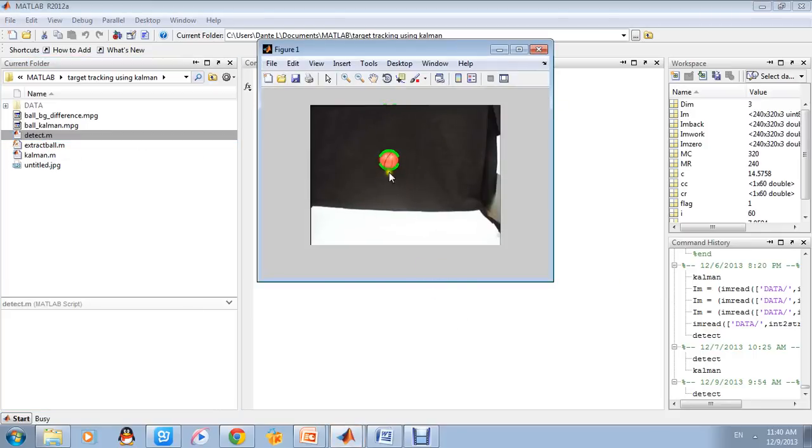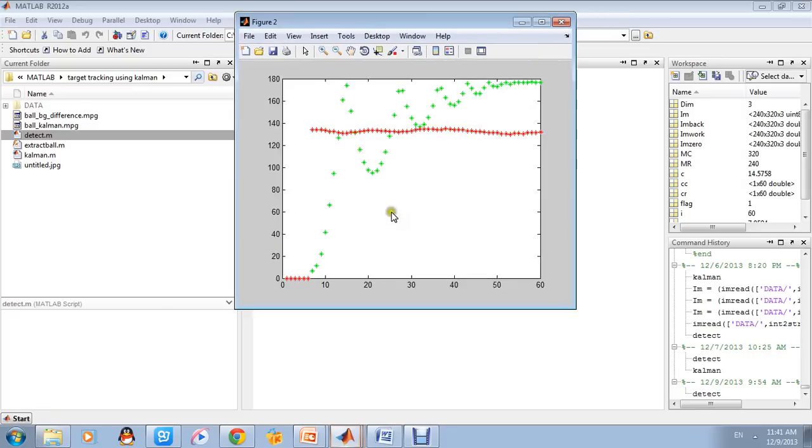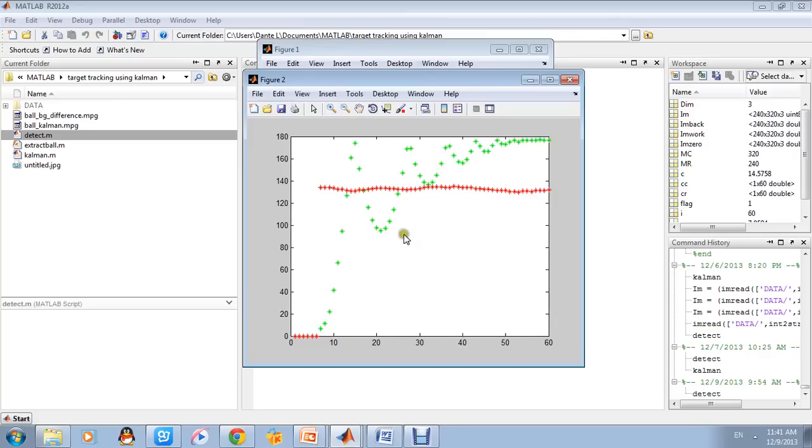We can clearly see the ball falls and there is a green outline here on the ball. Now, we have the result here.